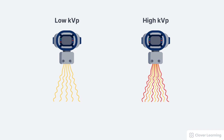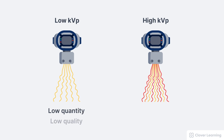kVp has a big influence on both the quantity and the quality of the x-ray beam, because raising the voltage in the x-ray tube produces higher energy photons, increasing the average energy or quality of the beam. The first x-ray beam on the left was created using a relatively low kVp. This results in only a few x-ray photons — so that's low quantity — but it also results in a very low average energy in the x-ray beam, so that's low quality.